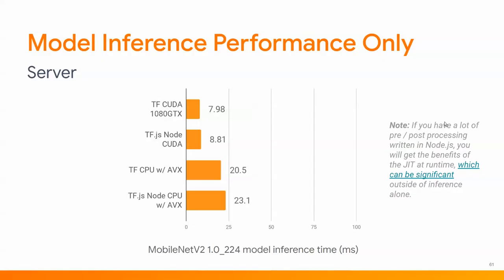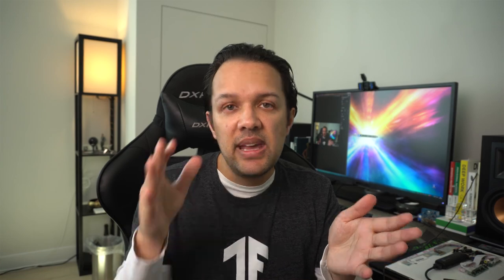Here is TensorFlow.js versus Python running MobileNet — these are the inference times for classifying an image. Running on the graphics card in Python: 7.98 milliseconds. In Node.js: just 8.81 milliseconds — within margin of error and pretty much the same for all intents and purposes. Where it gets interesting is that if you have a lot of pre- and post-processing, which many ML models do, you can actually get further performance increases in Node.js because of the just-in-time compiler. HuggingFace, famous for natural language processing models, saw a two times performance boost just by switching to Node.js for their ML pre- and post-processing.